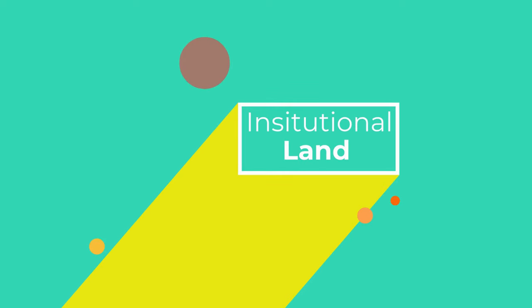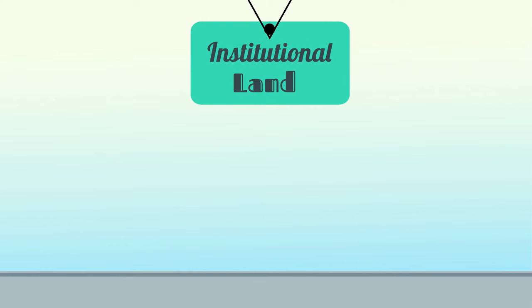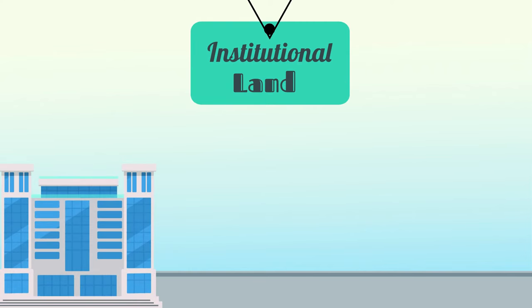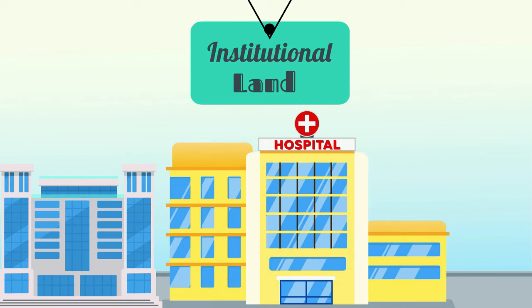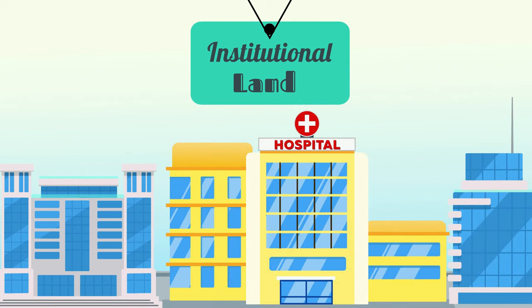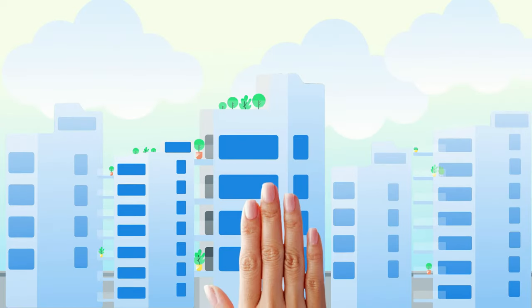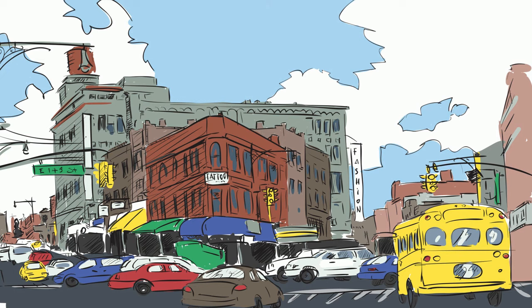Now onto institutional land. Institutional land is land that is used for community services. Examples of these are schools, emergency services, religious buildings, libraries, sports arenas, and government offices. These buildings are not only in one place but throughout the community so they're easily accessible to people who need them.